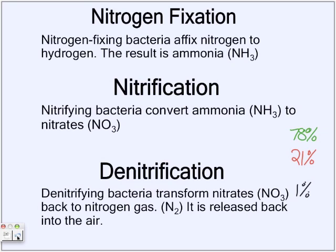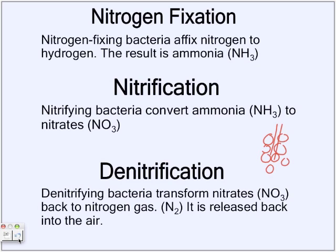Nitrogen fixation is when nitrogen gas turns into ammonia, moving from the atmosphere into the soil. This is carried out by nitrogen-fixing bacteria found in nodules of legumes — nodules are lumps on the roots that contain these bacteria. Examples of legumes include alfalfa, sprouts, and beans. Before artificial fertilizers, farmers would plant legumes in their fields to help their other crops grow faster and bigger.